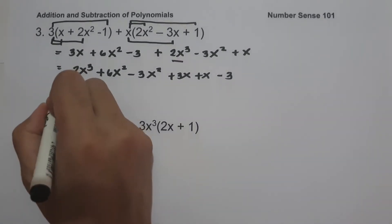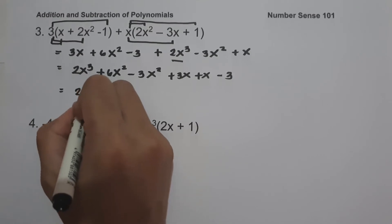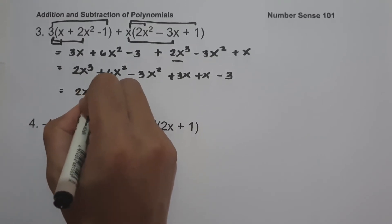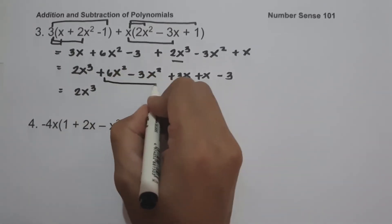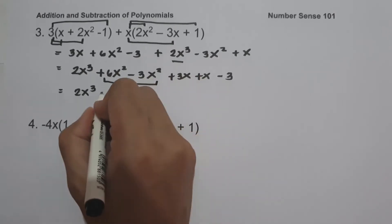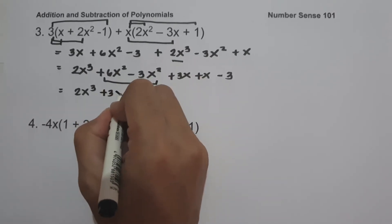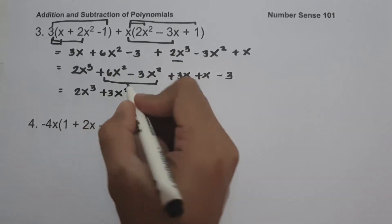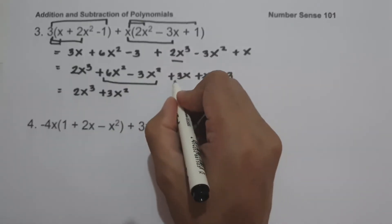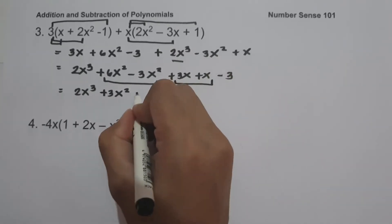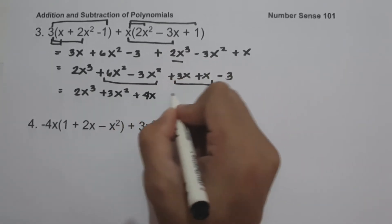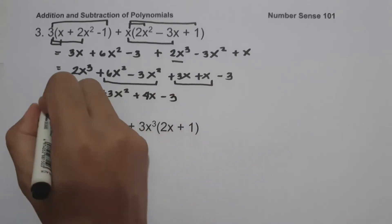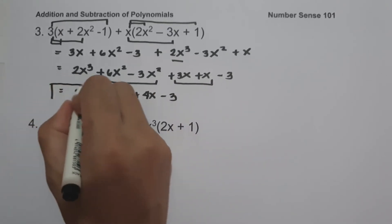We are going to have 2x cubed, then 6x squared minus 3x squared is 3x squared, and 3x plus x is 4x, and then we have negative 3. And this will be our answer.